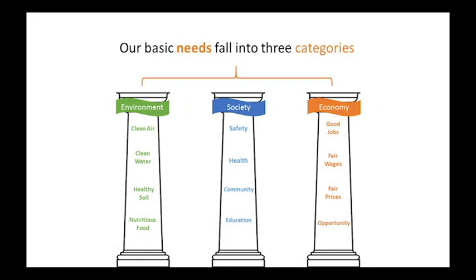Think about human needs and how they relate to sustainability. The basic needs of humans fall into three categories: environment, society, and economy. In environment, examples are clean air, clean water, and healthy soil to grow nutritious food. In society, we think about safety, health, good community, and good education. In economy, we think about having a good job, fair wages, fair prices of food or goods, and opportunity.